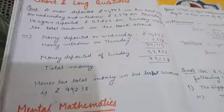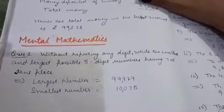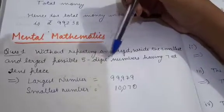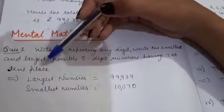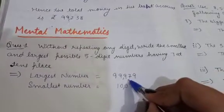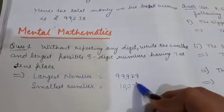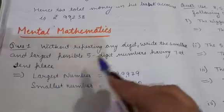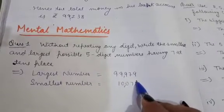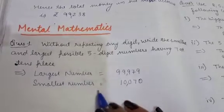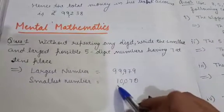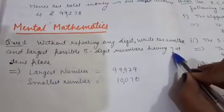Now let us move to the mental mathematics. Question one: without repeating any digit, write the smallest and the largest five-digit numbers having seven at the tens place. For the largest number, seven is fixed at the tens place and the rest of the digits will be nine. So the largest five-digit number having seven at the tens place is ninety-nine thousand nine hundred and seventy-nine. For the smallest number, seven is still at the tens place and the smallest five-digit number starts with one, so the number is ten thousand and seventy.